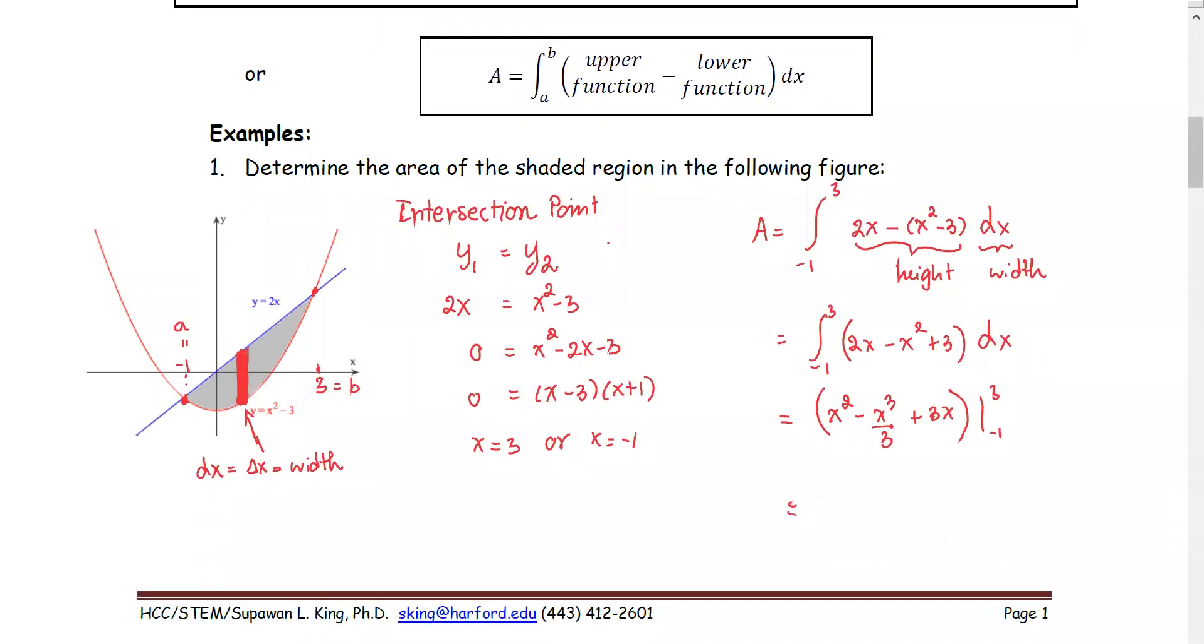Substitute the value into the terms: 3 squared minus 3 to the third over 3 plus 3 times 3, subtracted by the quantity from the lower limit.